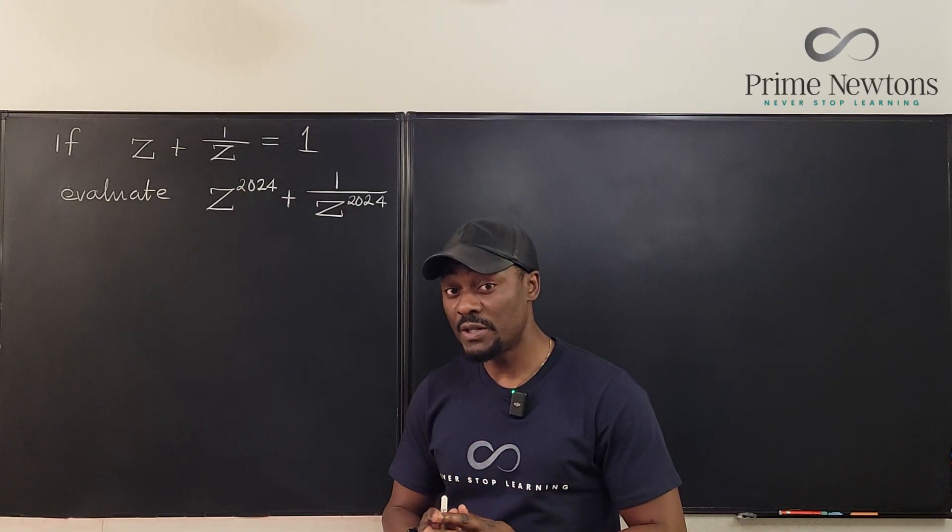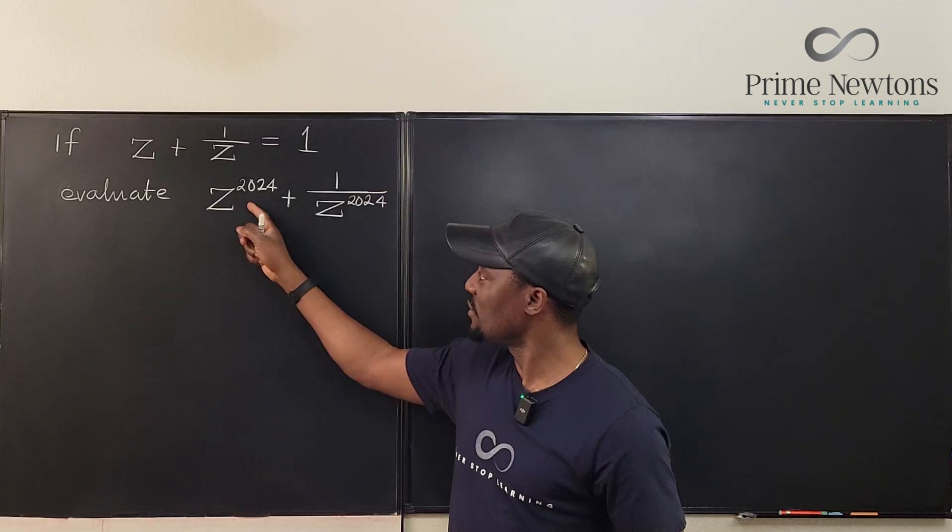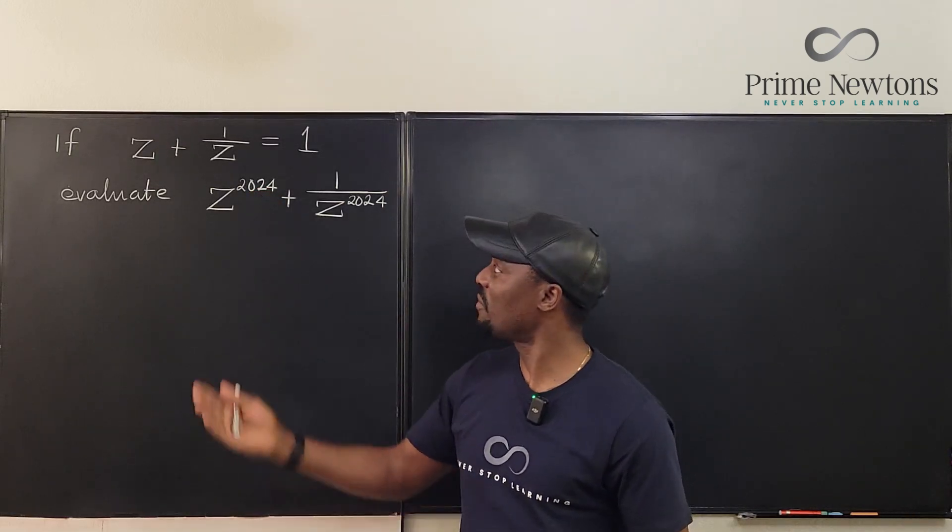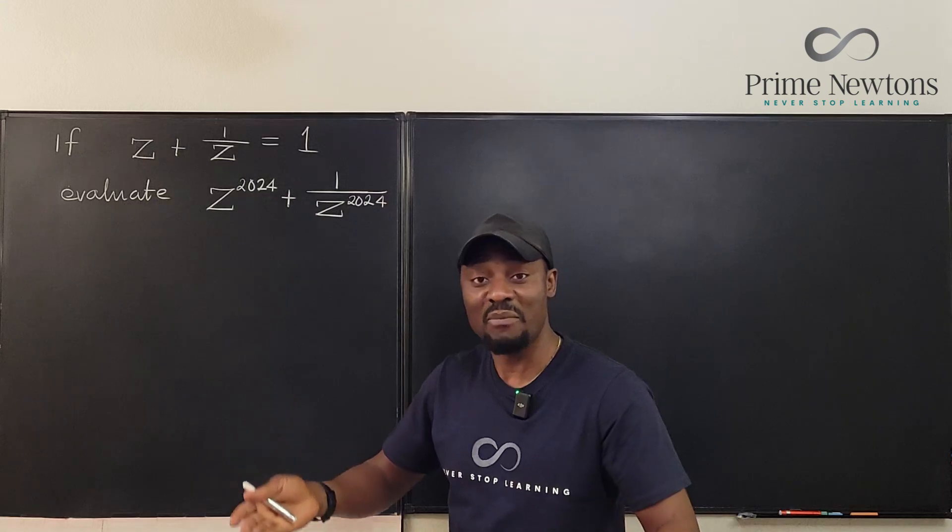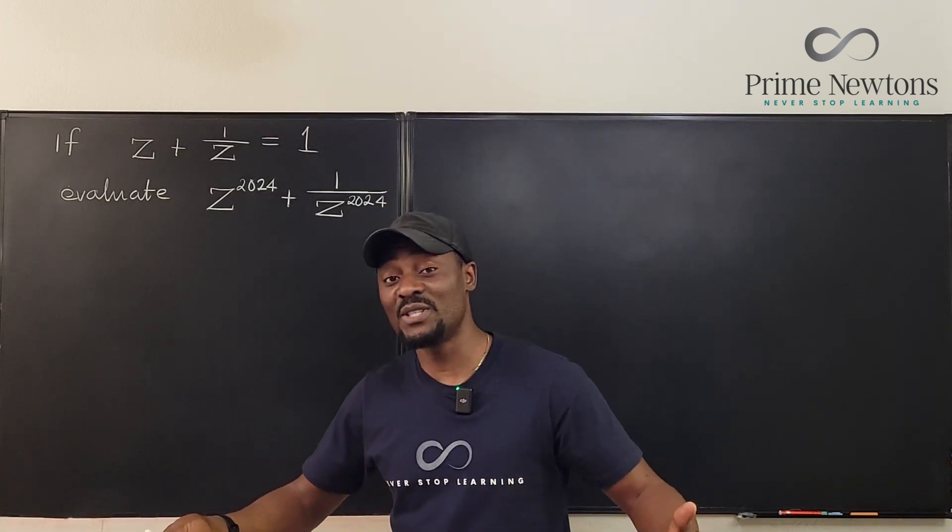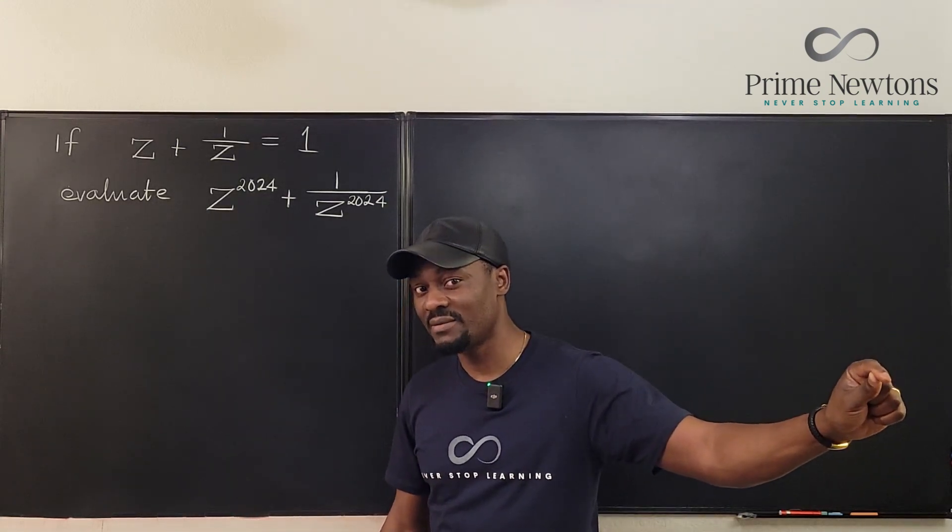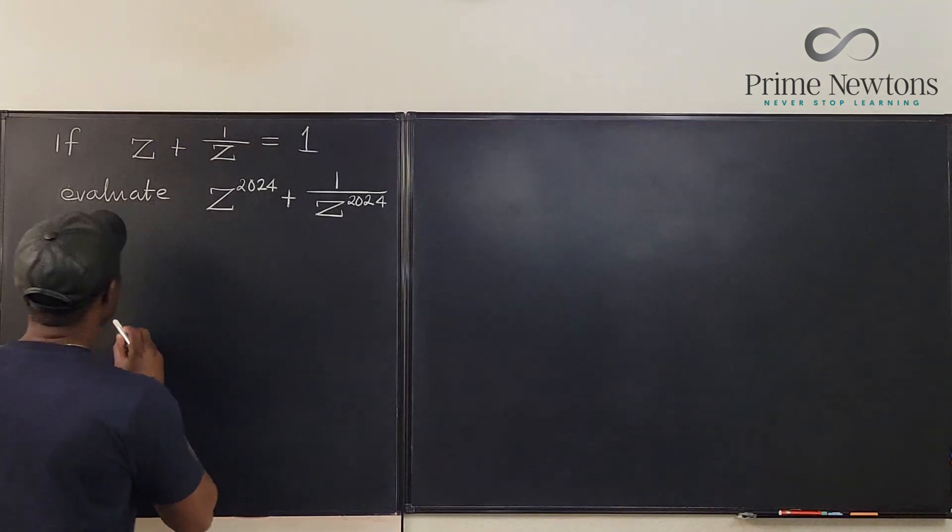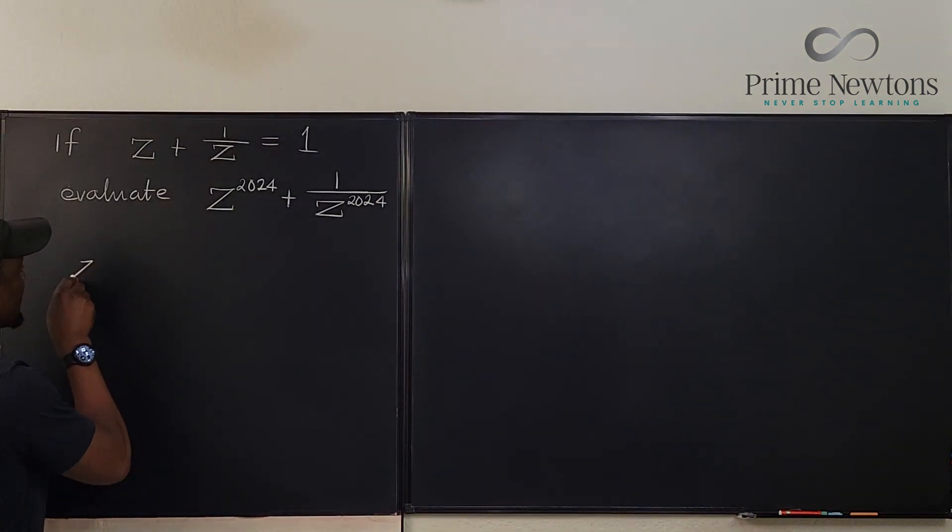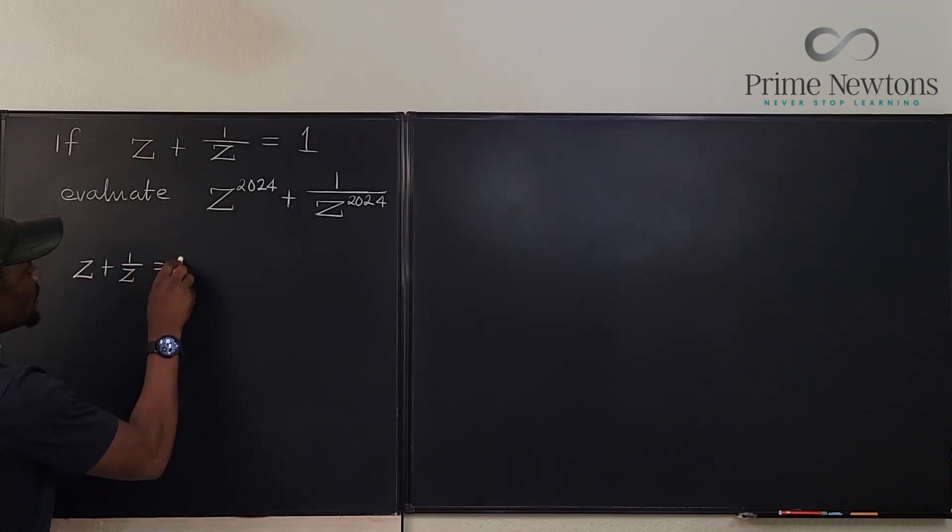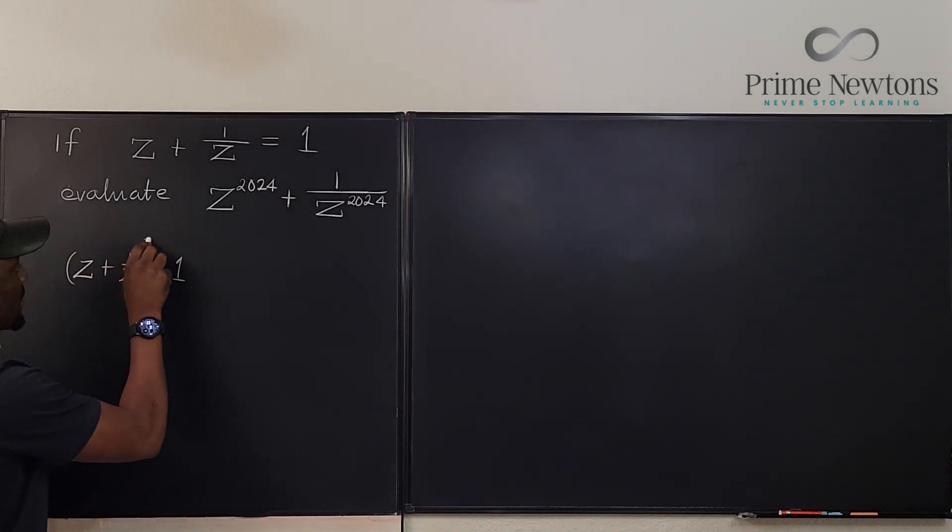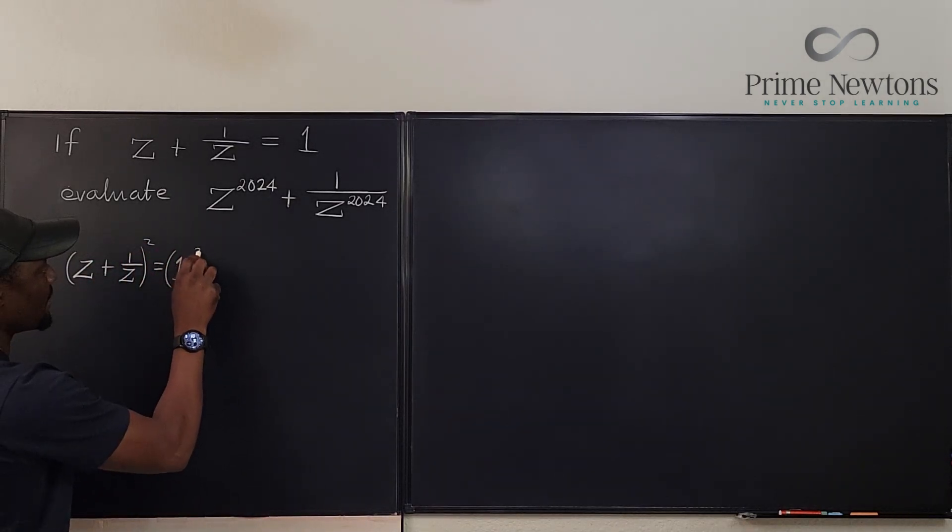So this is what we're going to do. We know that we're going to z to the 2024, but we have to start somewhere. So let's start by just squaring and see what happens. Maybe a pattern is going to develop and we might use it to predict the future. That's what scientists do. So we're going to say that z plus 1 over z equals 1. We're going to square.